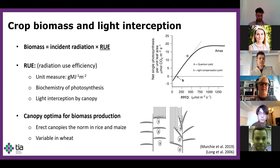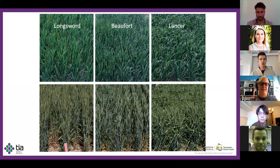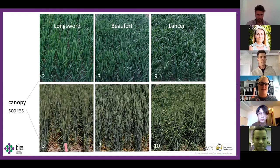There's evidence to suggest that an erect canopy type is the norm for important cereals such as rice and maize, however it is variable in wheat, as we can see with these three examples of Australian wheat cultivars all grown in the same environment. Top and bottom photos are from around flag leaf emergence and flowering, respectively. One of my co-supervisors, Richard Richards, developed a 1 to 10 scoring system for phenotyping canopy architecture, where 1 is the most erect and 10 is the most floppy.